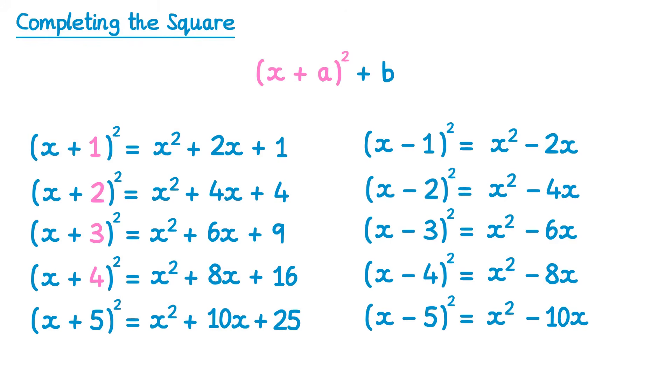However the last term remember we need to square these numbers. So take those numbers and square them. But remember squaring a negative number will always give you a positive number, because negative 1 times negative 1 gives you 1. Negative 2 times negative 2 gives you plus 4. Negative 3 times negative 3 gives you plus 9. Negative 4 times negative 4 is plus 16. And negative 5 times negative 5 is plus 25. So the only real difference here is the middle term.